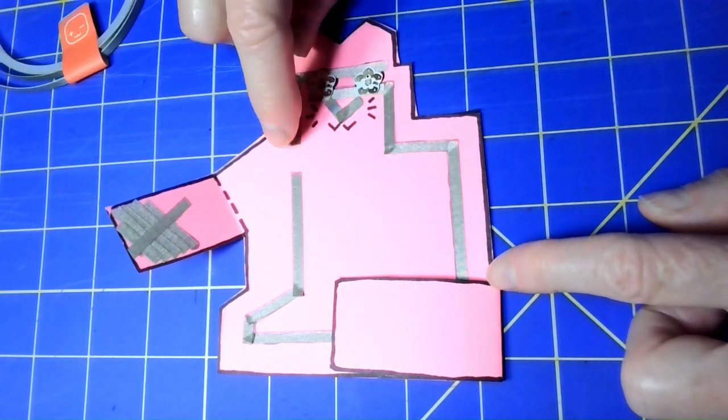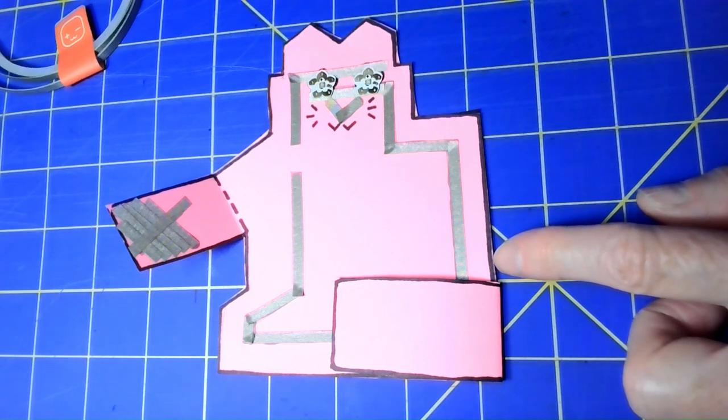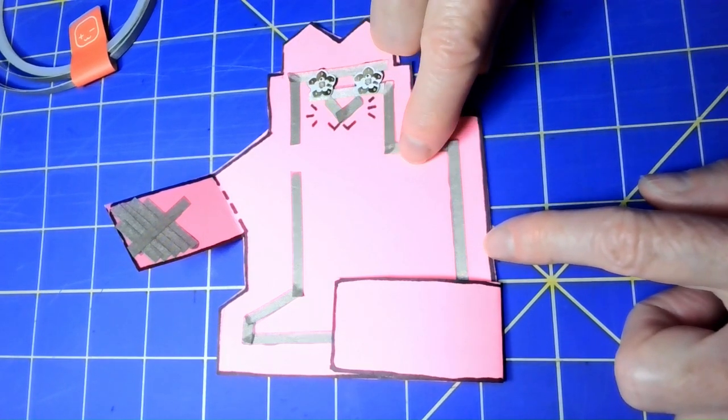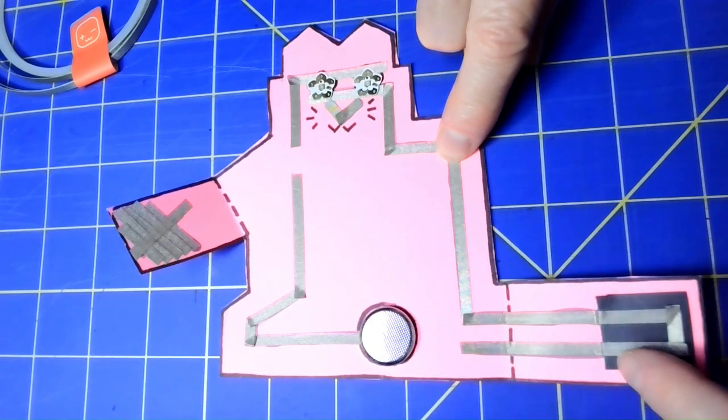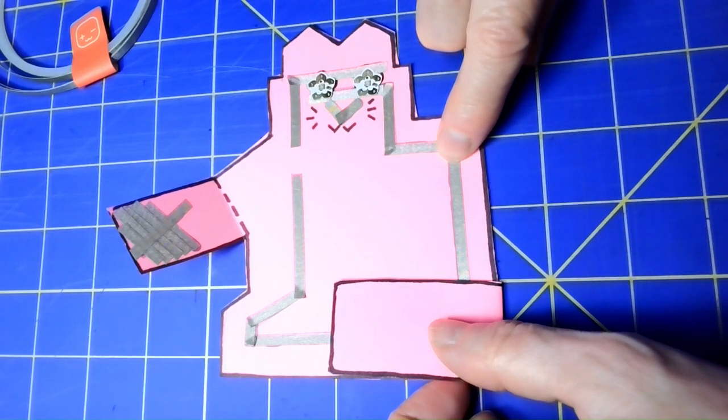You can see that the conductive tape, in this case the fabric tape, is part of the design and it also uses a magnet to hold the battery in place.